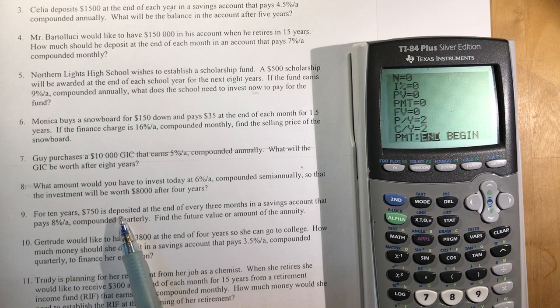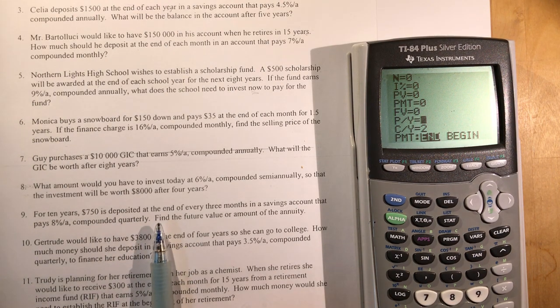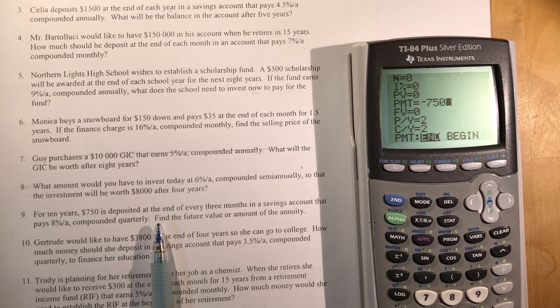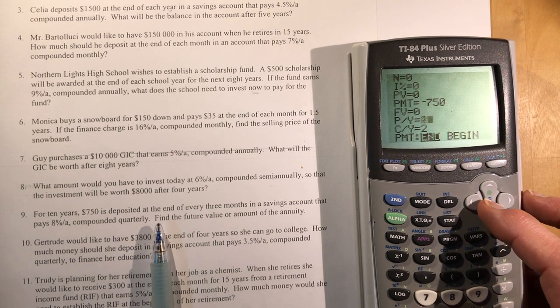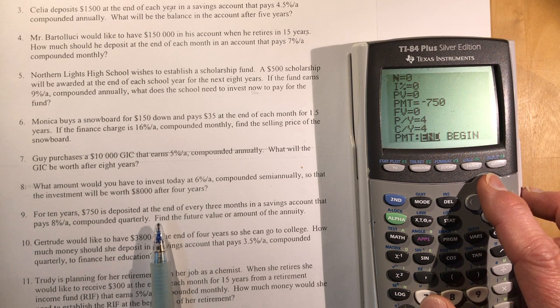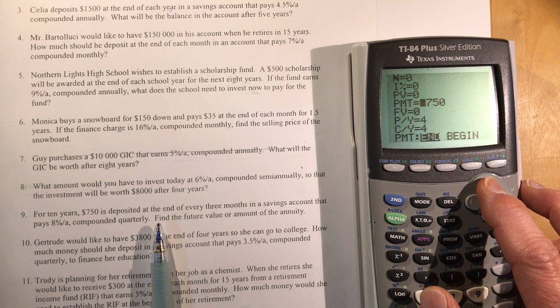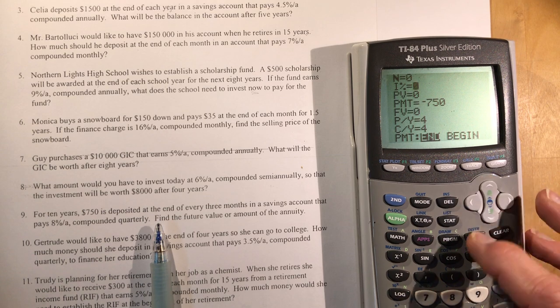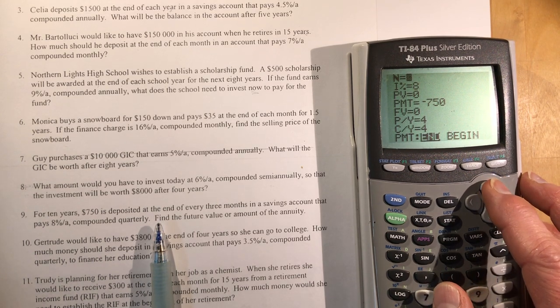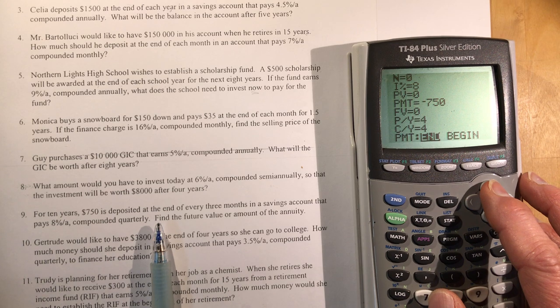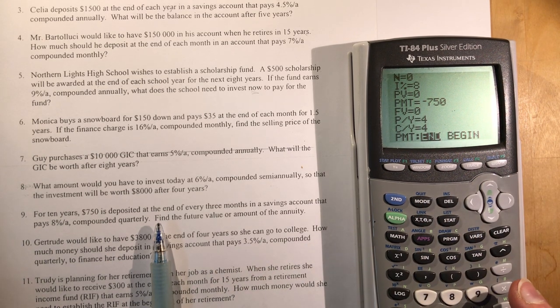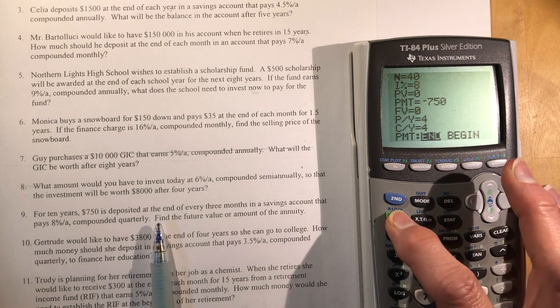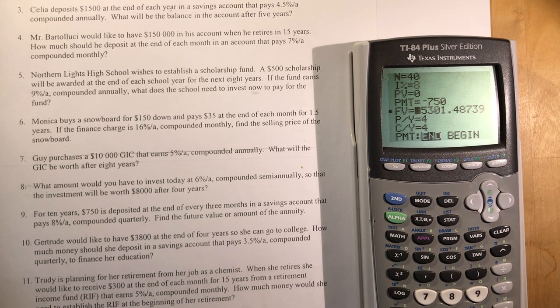For 10 years, $750 is deposited at the end of every three months. We're trying to find future value. We've got the payment. We have an interest rate of 8% and quarterly for 10 years. My n is going to be 40. I want to know the future value. There you go.